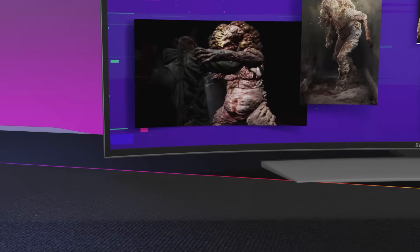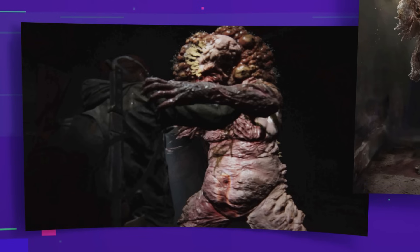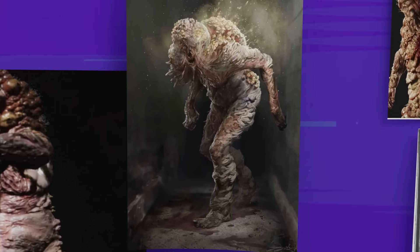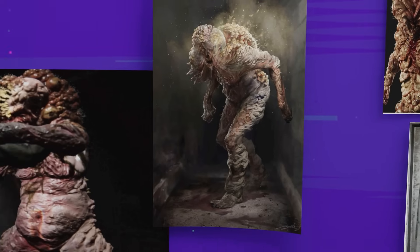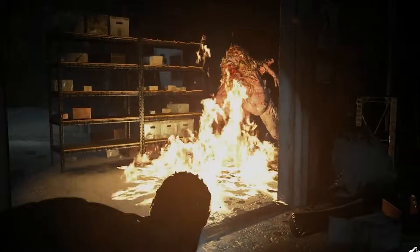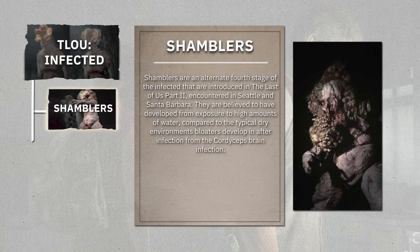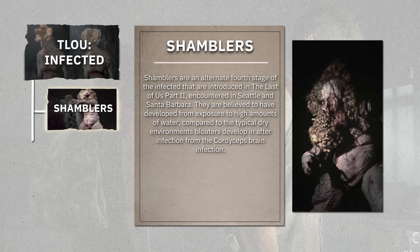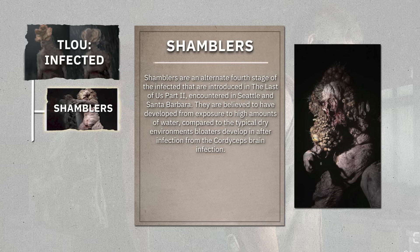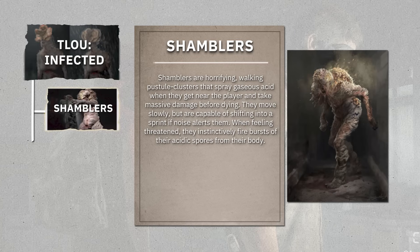Shamblers are a variant adapted for extremely wet environments. Unlike bloaters, shamblers cannot throw projectiles, but instead release corrosive bursts of spore-laden acid when damaged or killed. Their body chemistry appears different, tuned for dispersing spores quickly in damp air. Shamblers are less heavily armoured than bloaters, but compensate with explosive area-of-effect attacks that punish proximity. Their habitat choices — flooded subway tunnels, marshy ruins or abandoned ports — reflect real fungal tendencies to favour moisture for reproductive success. Fighting a shambler often requires distance tactics; engaging too closely risks inhalation of spores or severe acid burns.